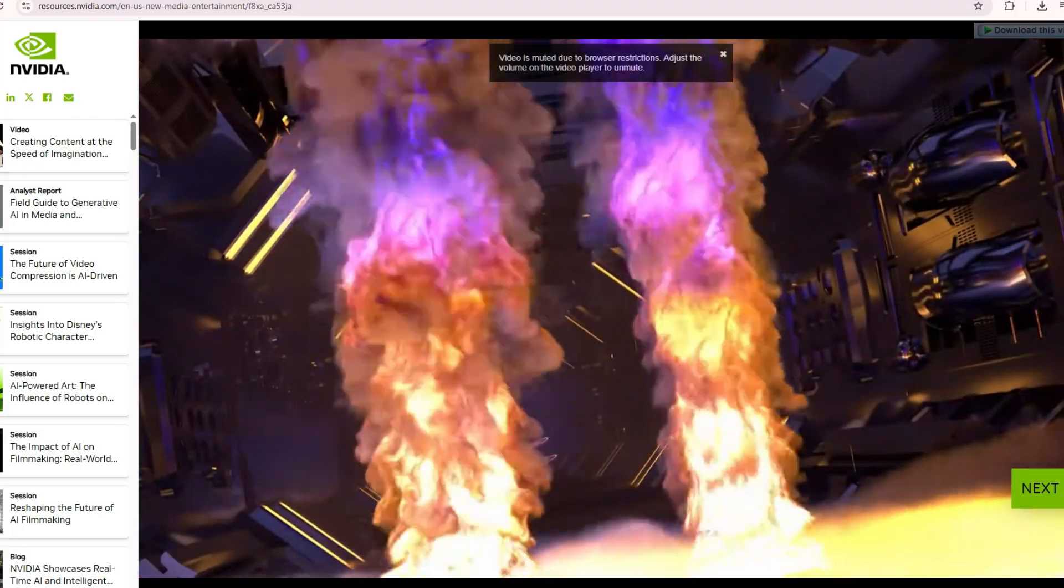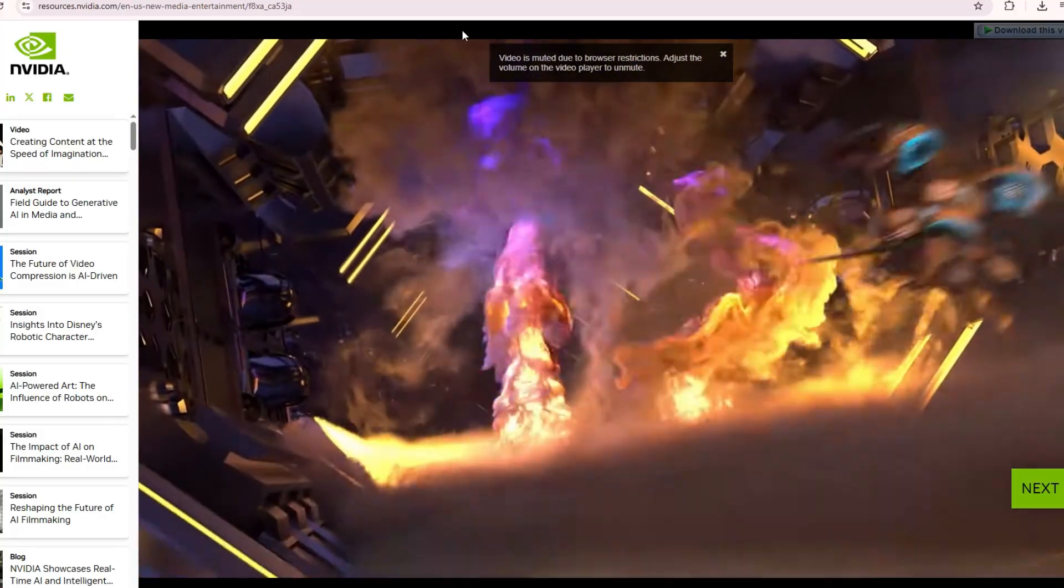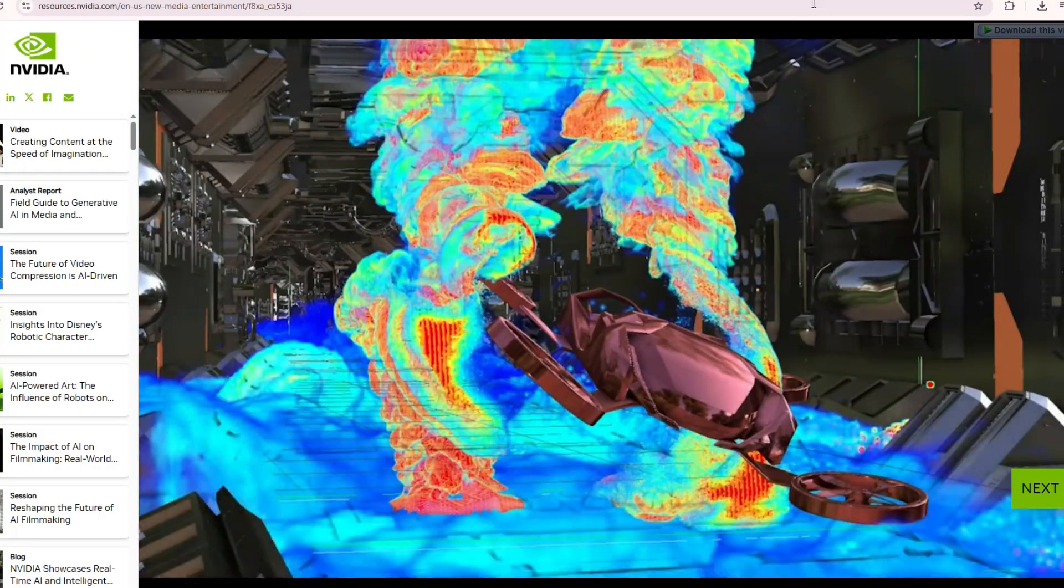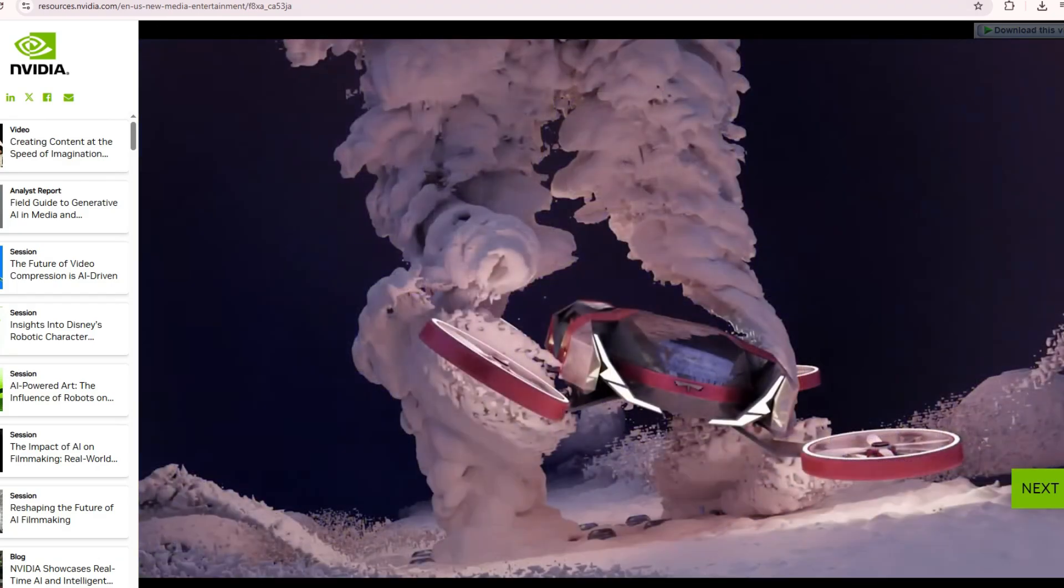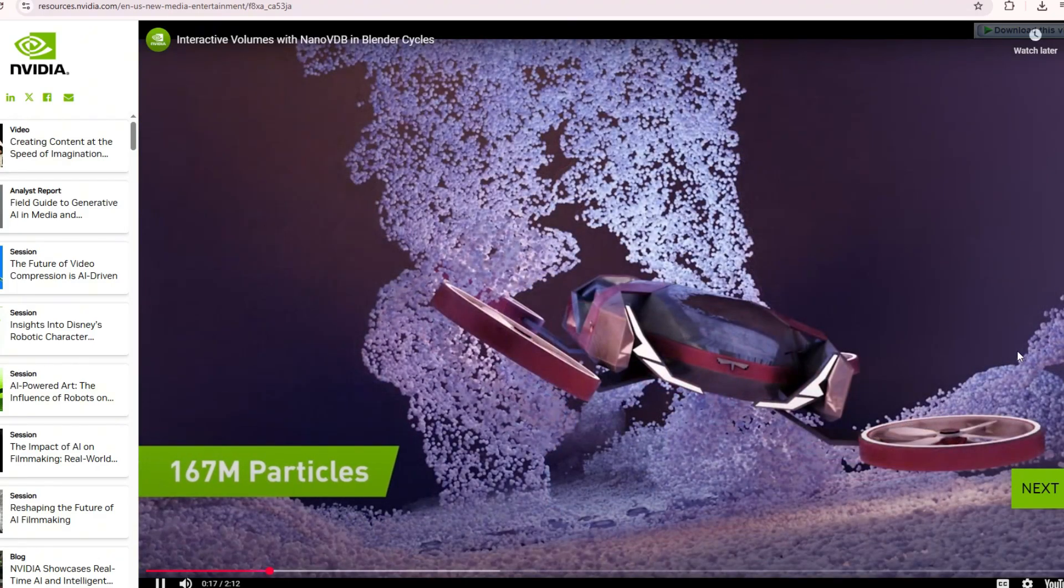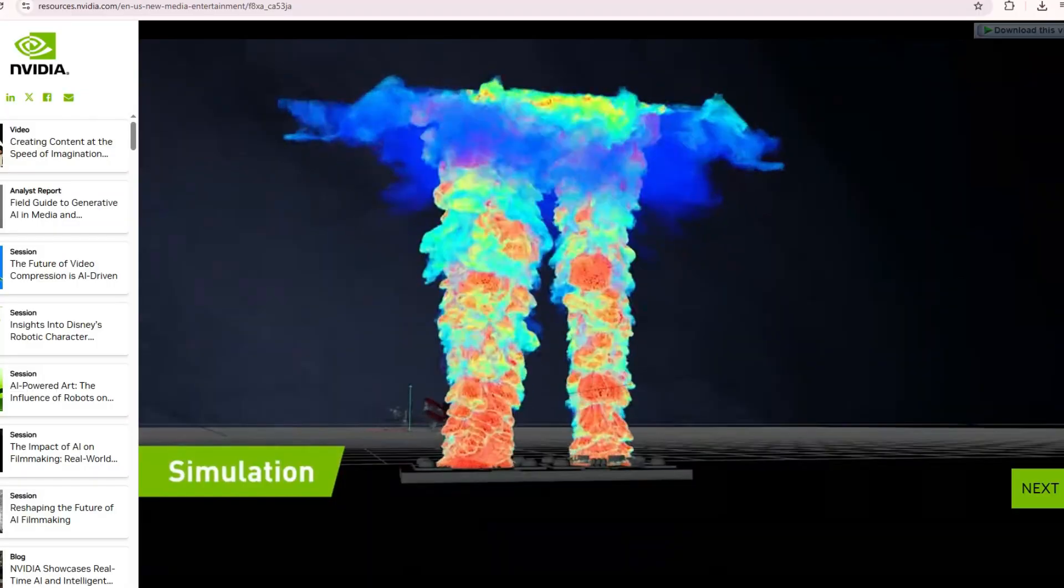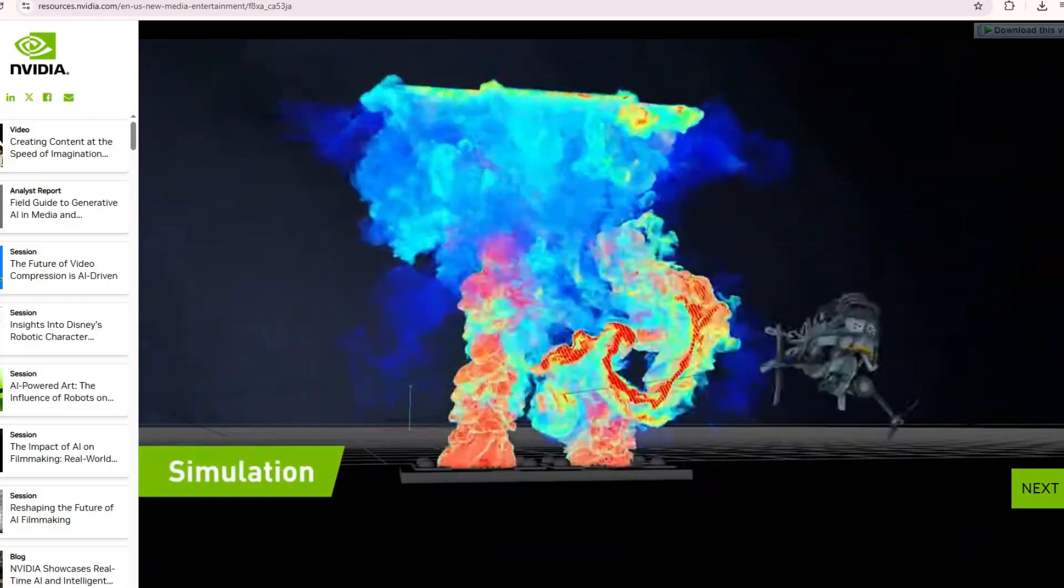Volume rendering now uses Nano VDB, which reduces memory usage, allowing complex smoke, fog, or other volumetric effects to be rendered faster and more efficiently. The result is that large and detailed scenes now appear more realistic, smoother, and professionally polished than ever before.